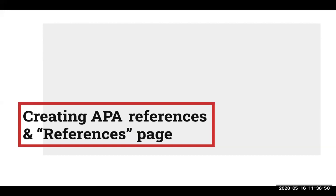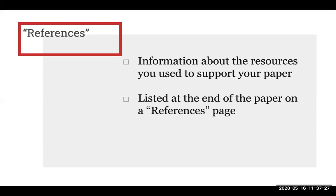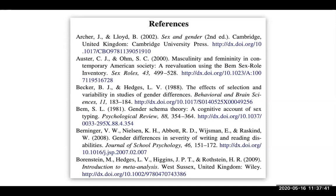So we've reviewed how to create in-text citations. Now let's review how to create what are called references, as well as how to create a references page following APA style. References contain information about the resources you use throughout your paper. Similar to in-text citations, they tell readers where you are borrowing a quote or idea from, but references have much more information in them than in-text citations. References are listed at the end of your paper on a separate page called the References page, which includes a list of all the resources you used, all in one place.